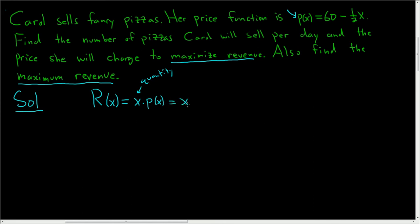So here we get x times (60 - 1/2x), just replacing p(x) with the formula, and so this is 60x - 1/2x². So the revenue function, write it one more time, is equal to 60x - 1/2x².